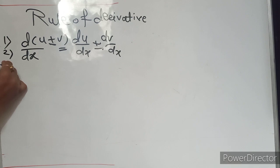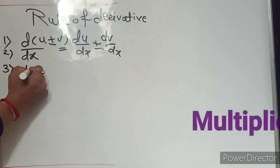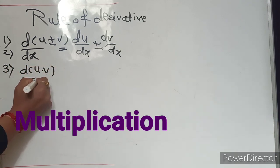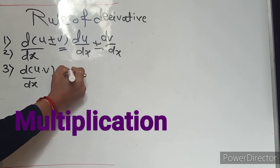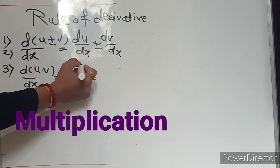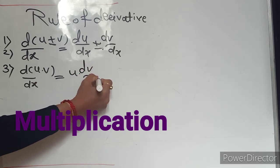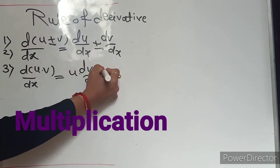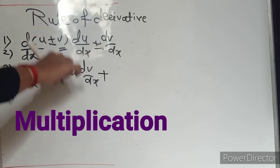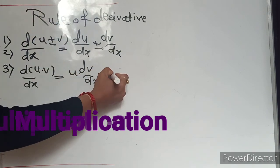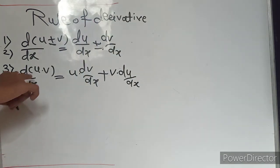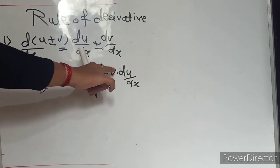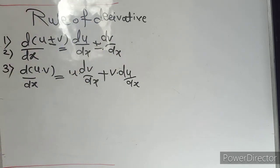What is the third rule? That is multiplication. Agar hume doh functions ki multiplication di hui hai aur uske derivative find out karna hai, toh rule remember karo: the multiplication rule starts with u — first function as it is — into derivative of v with respect to x, plus v function as it is into derivative of u with respect to x. First function times derivative of second, plus second function as it is times derivative of first.